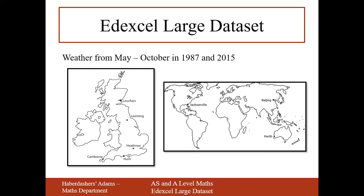To give you some background on the large data set: we have weather statistics between May and October for two different time periods — 1987 and 2015 — covering five different places in the UK and three different places abroad. The UK locations are Lechaz, Leeming, Heathrow, Hearn, and Camborne. You can see where this data set is going — it's looking at global warming and allows you to test the effects of global warming on weather statistics across these locations.